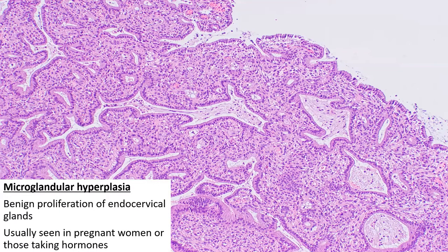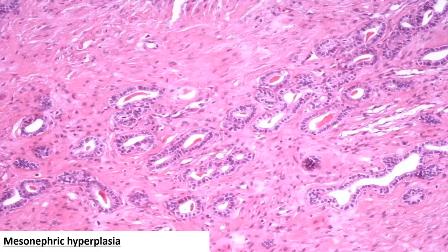Another benign lesion found incidentally in the cervix is microglandular hyperplasia — a benign proliferation of endocervical glands usually seen in pregnant women or those taking hormones. There is no atypia and mitotic activity is extremely low. Similarly, mesonephric hyperplasia consists of groups of glands and tubules lined by low cuboidal epithelium, with lumens usually filled with dense eosinophilic, PAS-positive and diastase-resistant material.